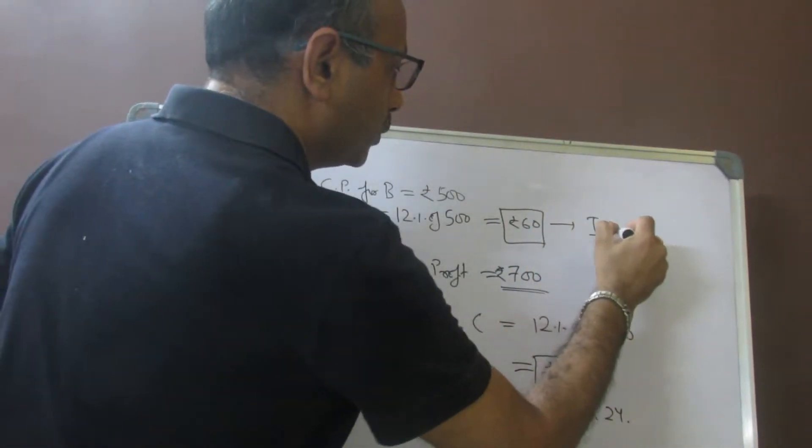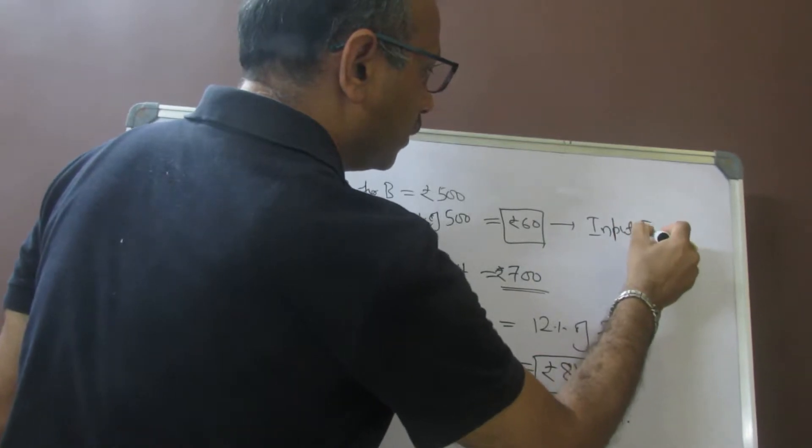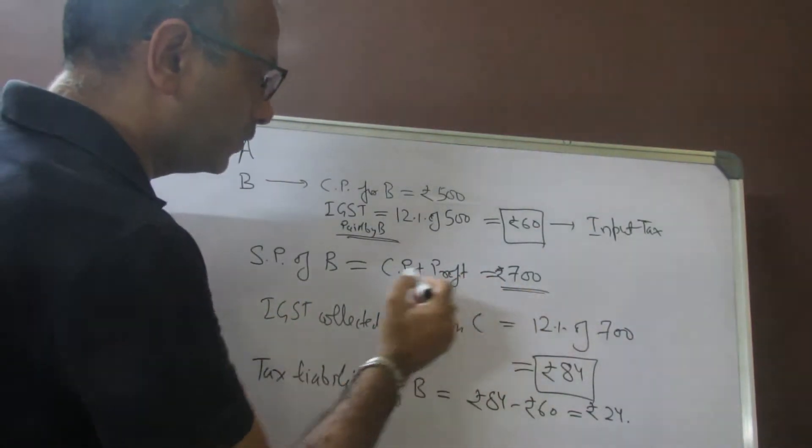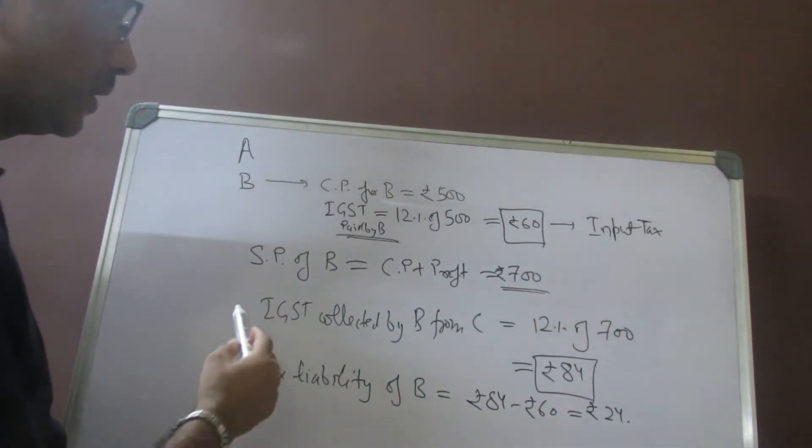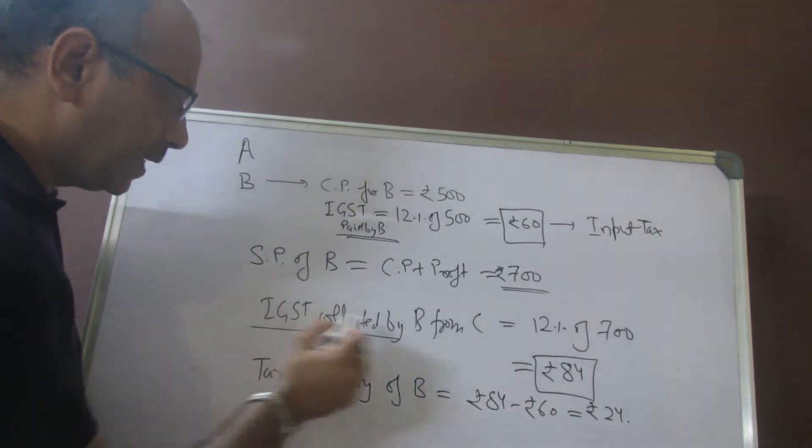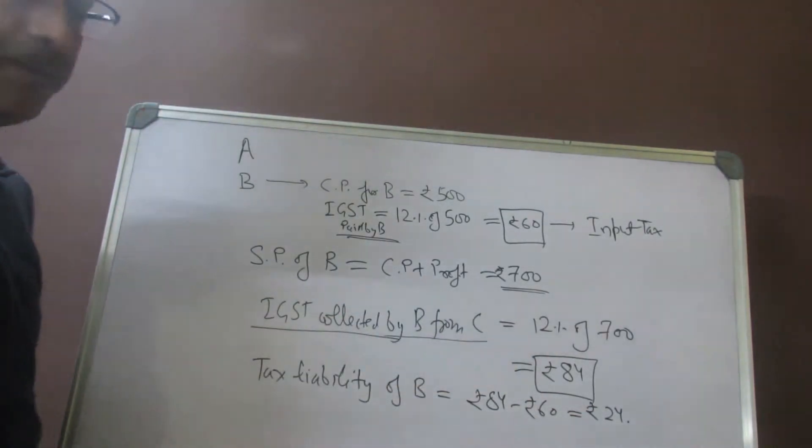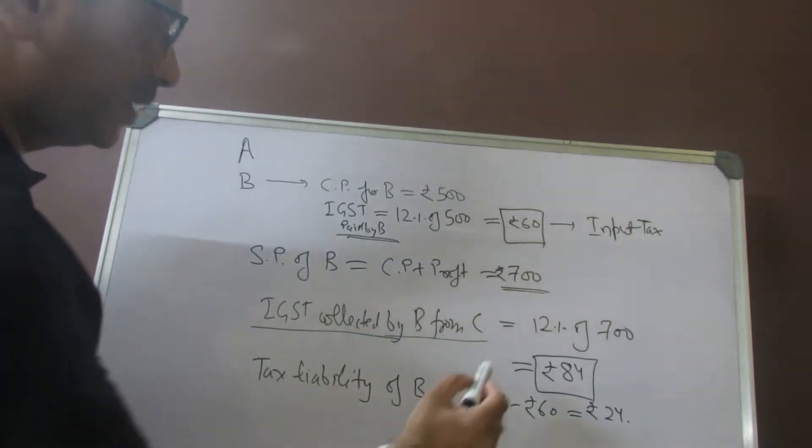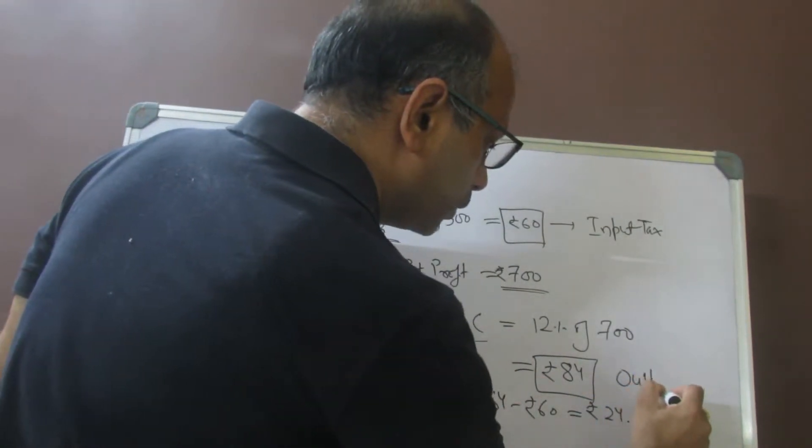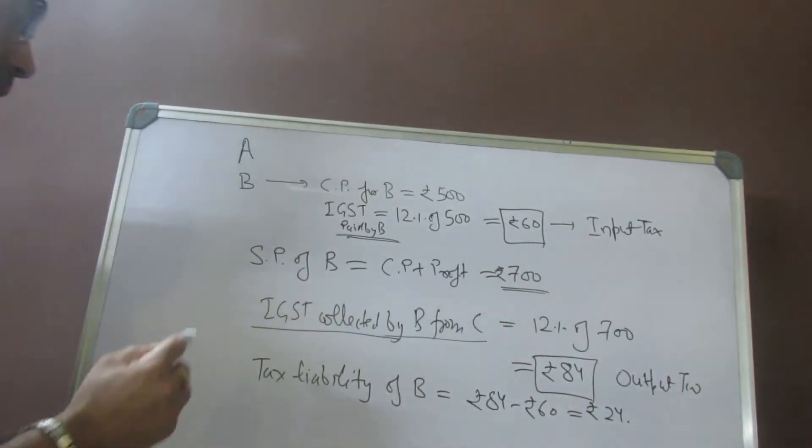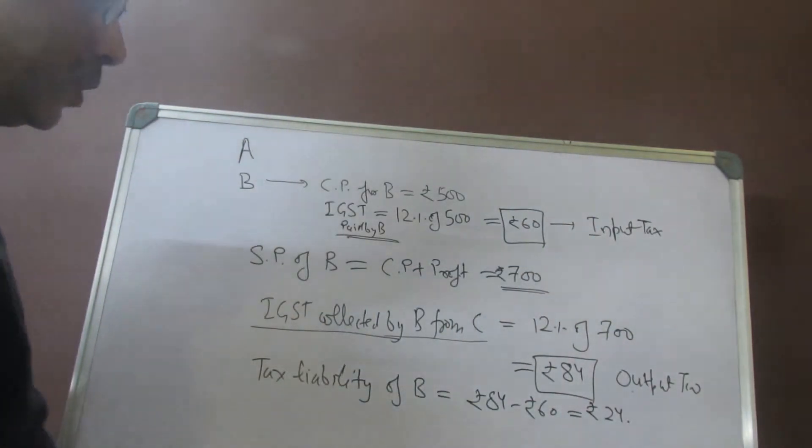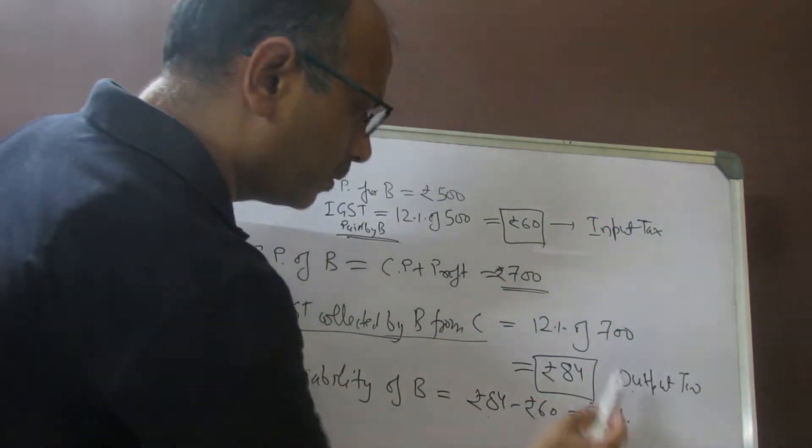Now B made a profit of 200 rupees, so selling price for B becomes 700 rupees, and the IGST collected by B from C would be 12% of 700, which is 84 rupees. This is called output tax. The tax liability would be output tax minus input tax, so 84 minus 60 rupees, which is 24 rupees.